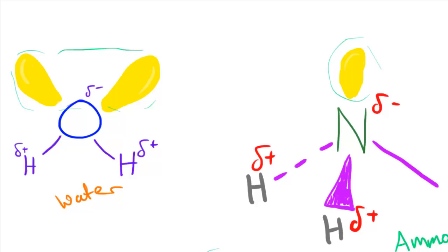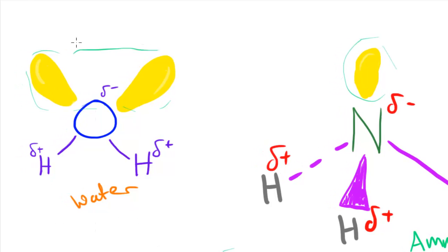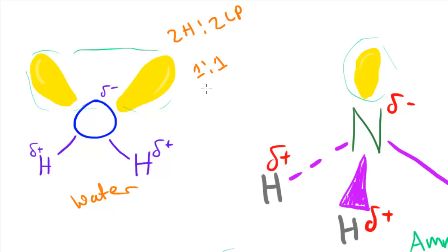Looking at H₂O first: we have two hydrogen atoms and two lone pairs, which simplifies to a 1:1 ratio — one hydrogen for every one lone pair. This means every single hydrogen in water is maximized for bonding; every one partakes in hydrogen bonding because we have an equal number of lone pairs and hydrogens.